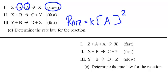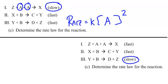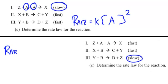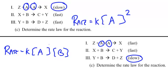Let's look at what the rate law would be if the rate-determining step was the final step. If the rate-determining step was my final step, I went through two moles of A and two moles of B to get there — I went through everything. So the rate law would be rate equals k times A squared times B squared.